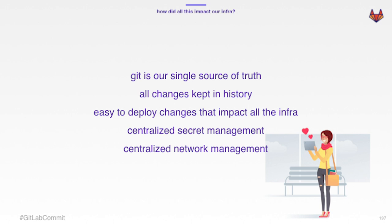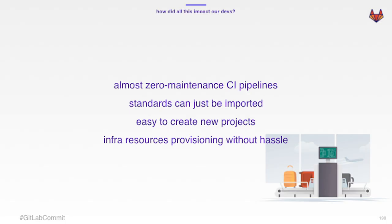How did all this impact our infrastructure? Git is our single source of truth now — we don't have to guess or spend weeks finding things, we can just check the code. All changes are kept in history, so we can understand why things were done a certain way, or at least point to the people who did it. It's easy for us to deploy changes that impact a lot of things, mainly because we use common resources shared across projects, or if that's not possible, we know the structure is common enough to write code that patches our own code. We've also centralized both secret and network management, which are critical parts we don't want to leave up to individual projects. For developers, they can have almost zero-maintenance pipelines by just importing our templates. We can provide standards as libraries — like user agents for free. It's easy to create new projects and provision infrastructure without big hassle.